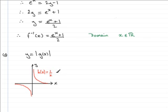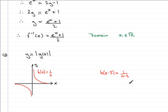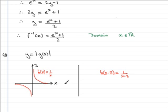Now we've got to build this into 2 over x minus 3. What I can do is replace the x with x minus 3. So that would give me a new function — let's just write it down here — it would be the function h of x minus 3, and this would be equal to 1 over x minus 3. Subtracting 3 from x translates the graph 3 units to the right. So if we draw this on a new set of axes...